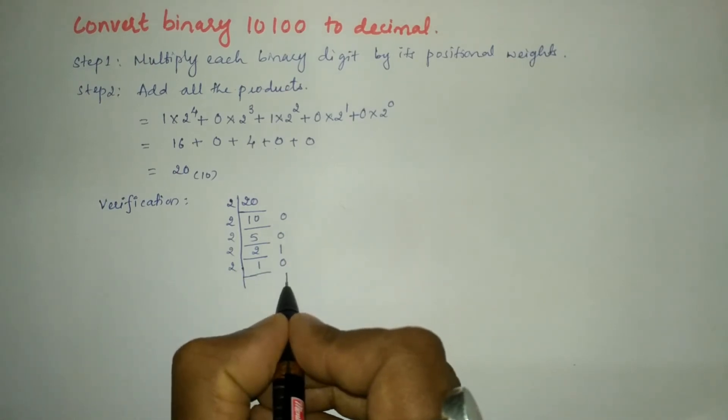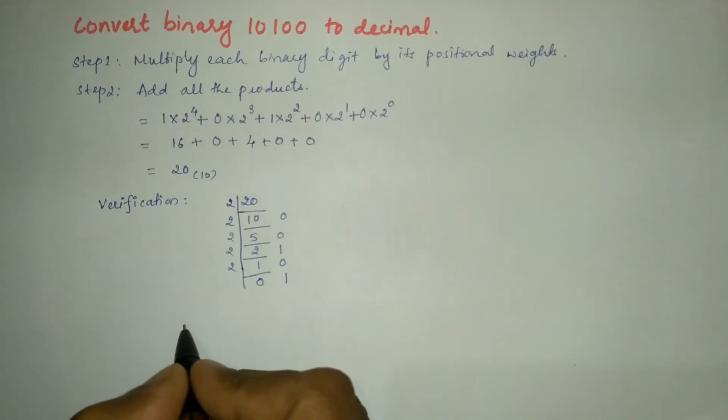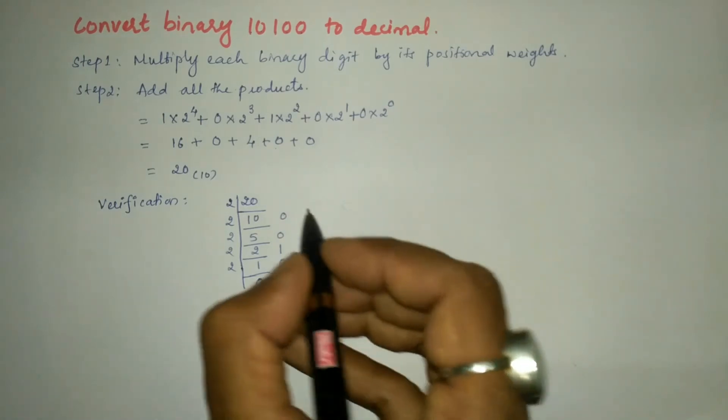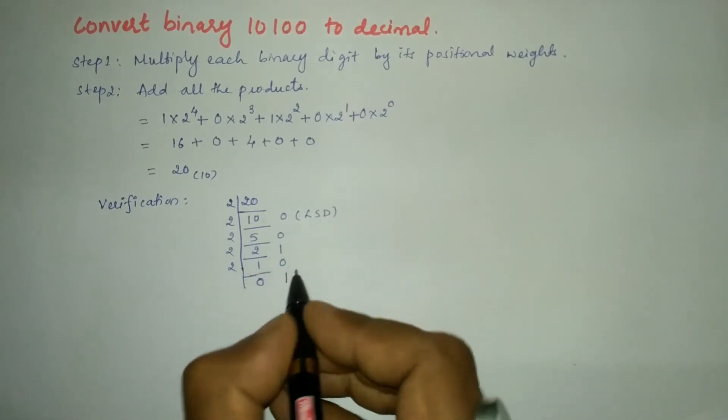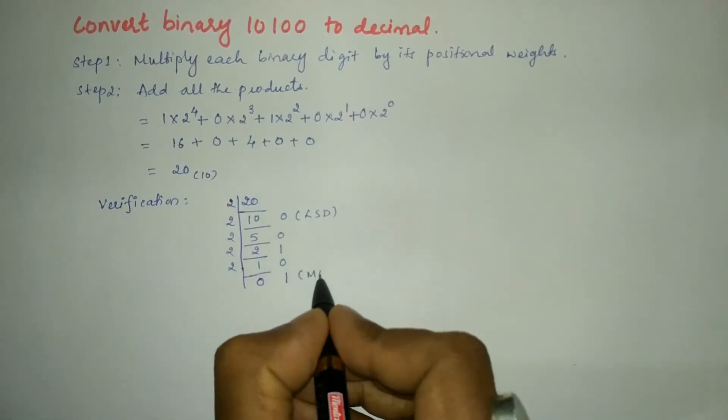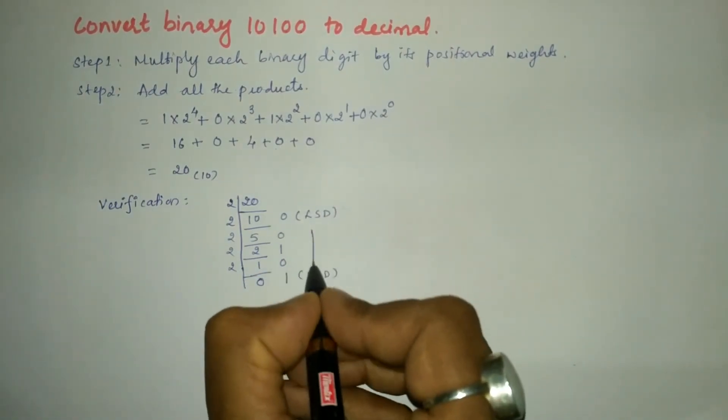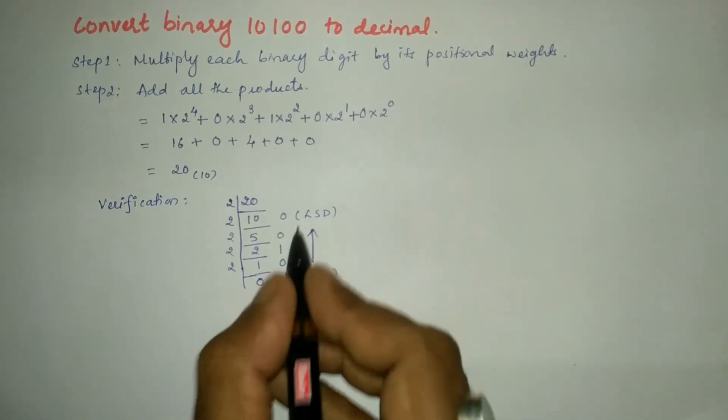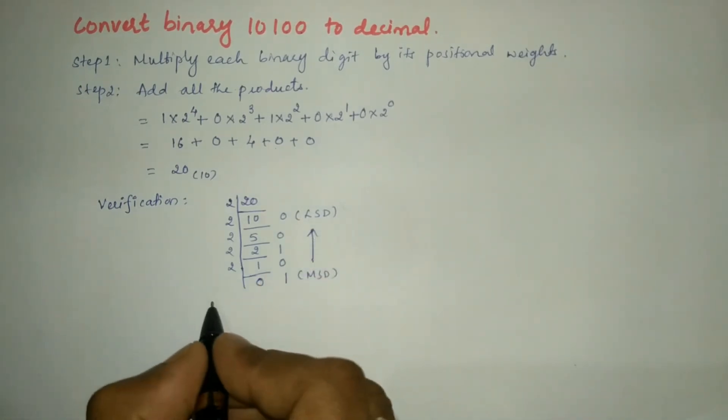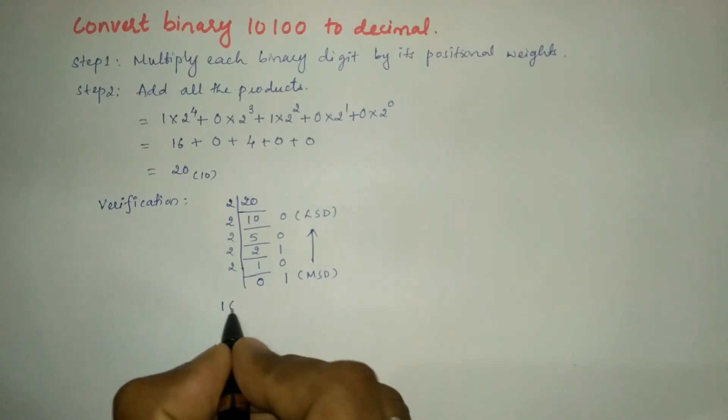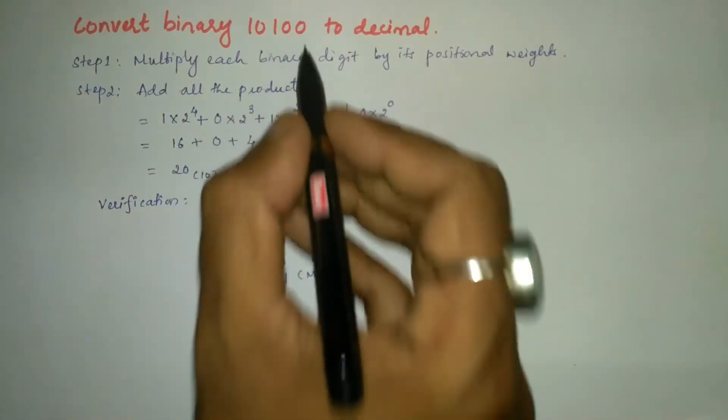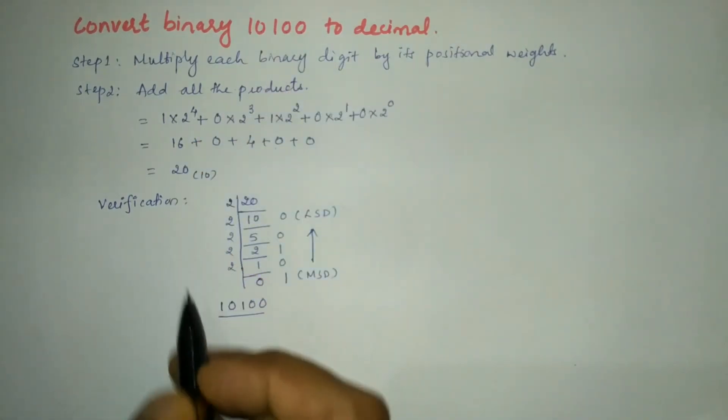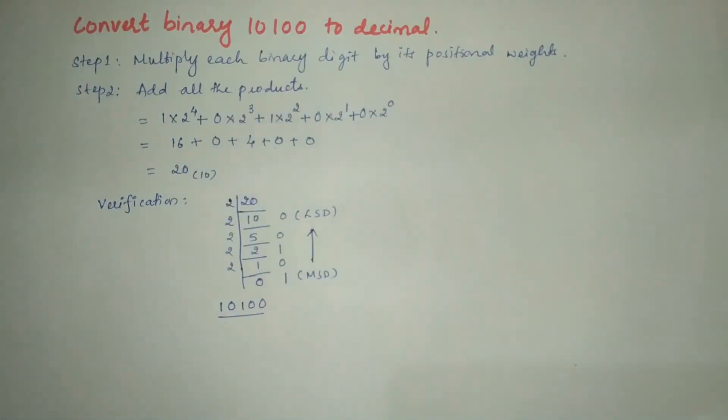The first remainder is called least significant digit and the last remainder is called most significant digit. We write it from most significant digit to least significant digit. Now you can write 1, 0, 1, 0, 0, which is the same as the given number. Hence, this 20 is absolutely the correct answer.